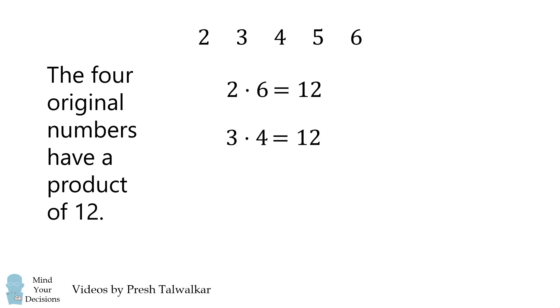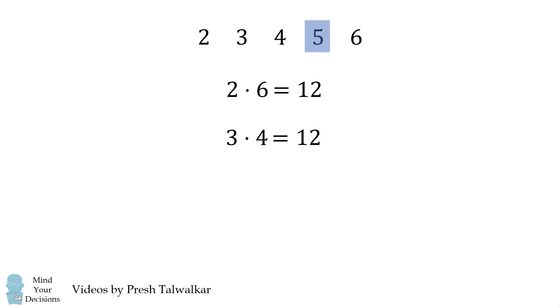We have 2 times 6 which is 12, 3 times 4 which is 12, and so 5 is the product which is not involved. Therefore, 5 times X must be equal to 12, and that sixth product will be equal to 12 over 5, or 2.4. And that's our answer.